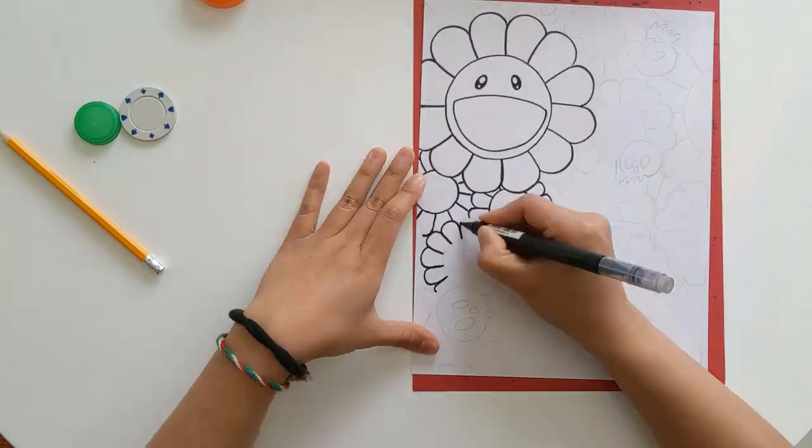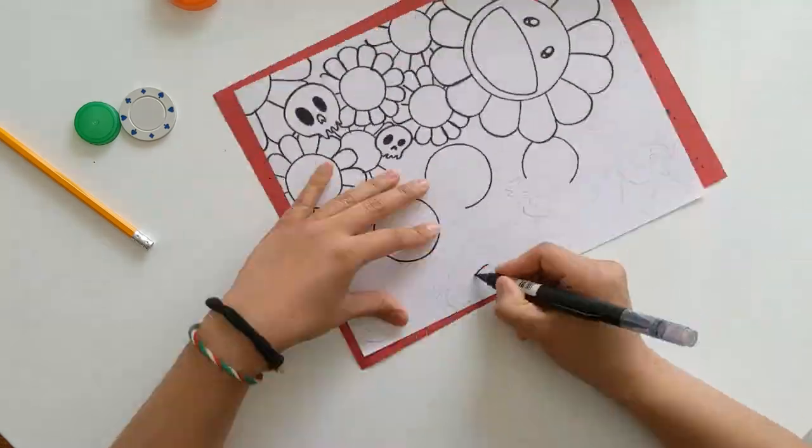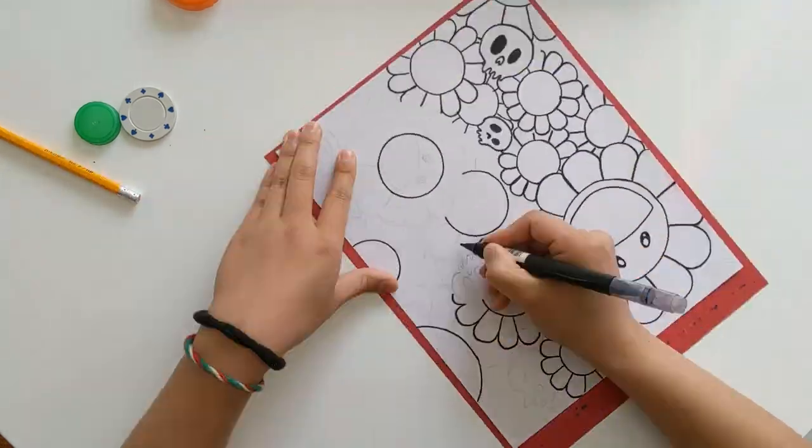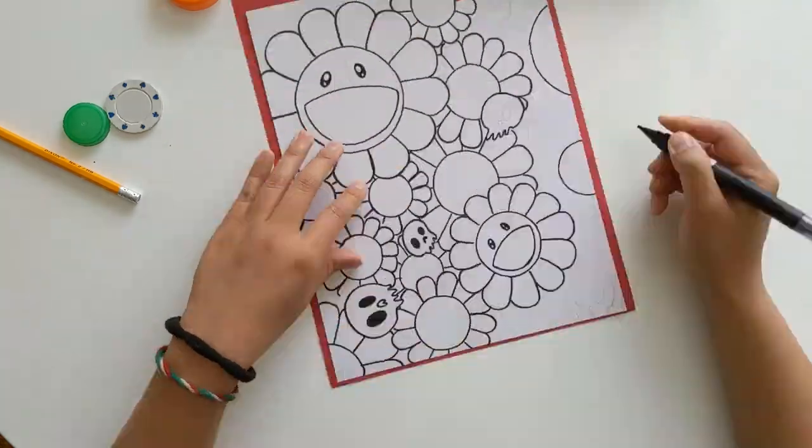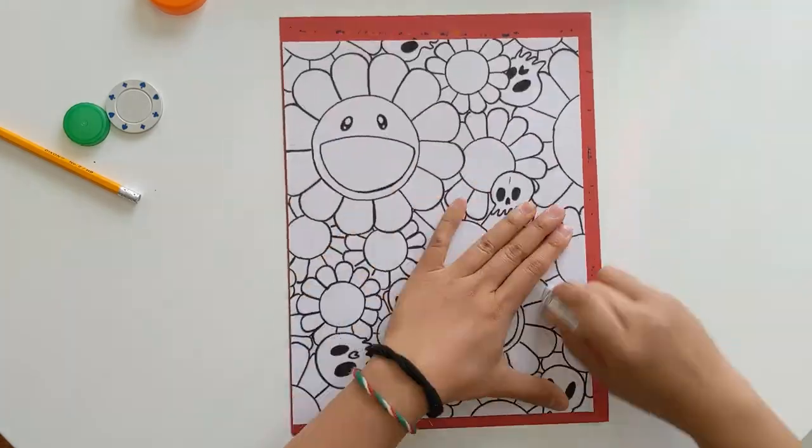The final step is to add the color. You can color it however you want using the medium of your choice. I will be using crayons. Color using random bold bright colors or use a color theme. I will use the blue theme just like Murakami's painting.